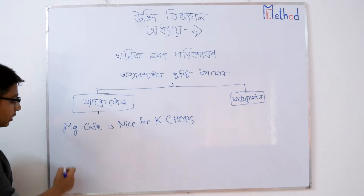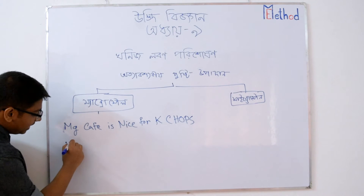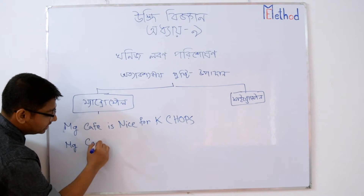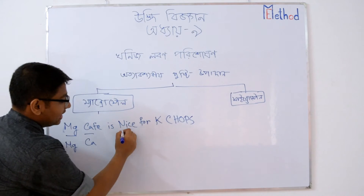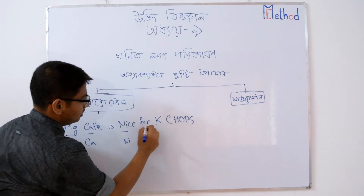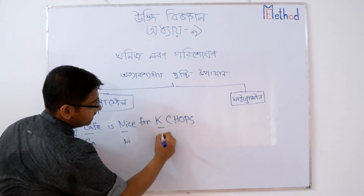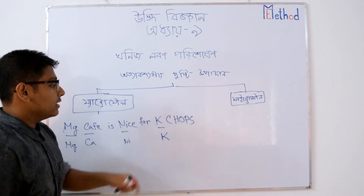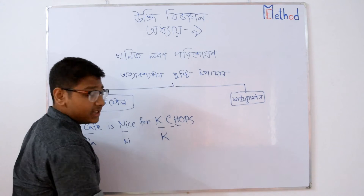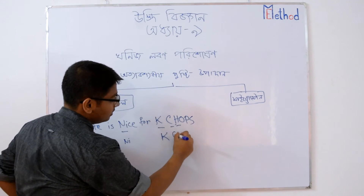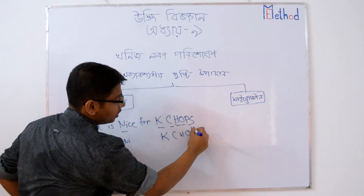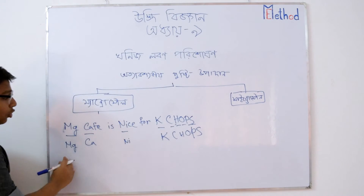MD — magnesium. Cafe — calcium. Ni — nickel. K — potassium. C — carbon. H — hydrogen. O — oxygen. P — phosphorus. Sulfur.